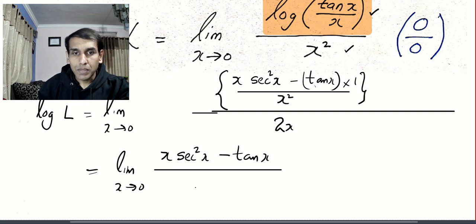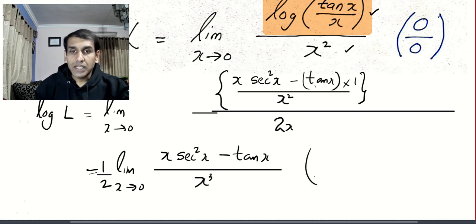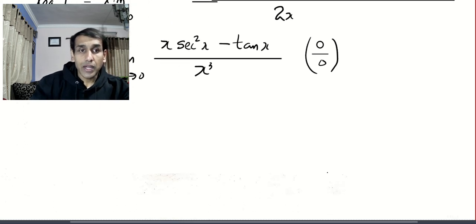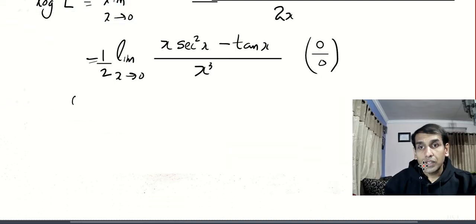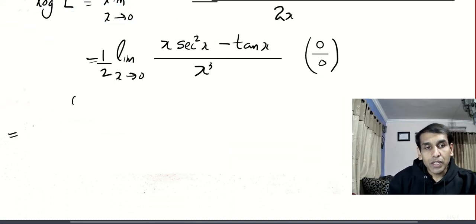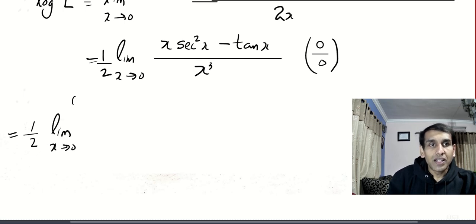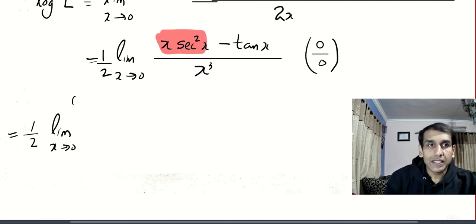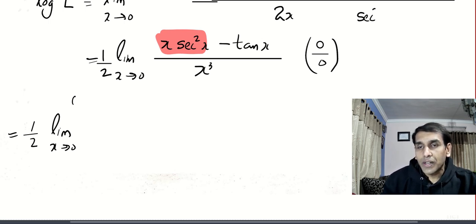I'll put 1/2 outside. Testing the limit: 0 times something minus 0, divided by 0 — so we get 0/0. As usual, we apply L'Hôpital's rule again. That gives 1/2 times the limit as x tends to 0. Now, how are you planning to differentiate this? Product rule. And how do you differentiate sec²x?